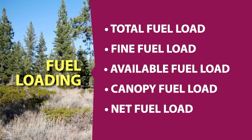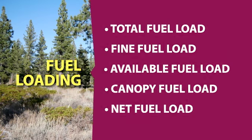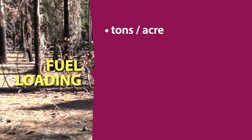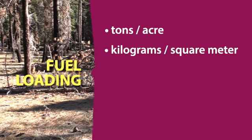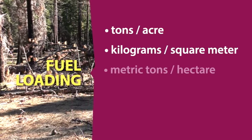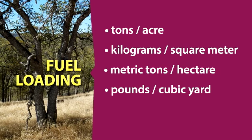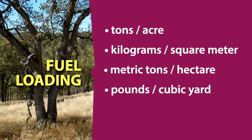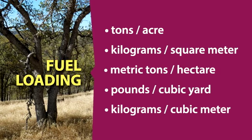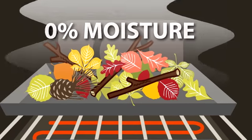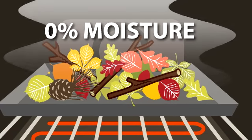Each is measured as mass per unit of area or volume, typically tons per acre, kilograms per square meter, metric tons per hectare, pounds per cubic yard, or kilograms per cubic meter. With the exception of measurements of available fuel load, these values should reflect 0% moisture content, so the weight of any moisture should be deducted.